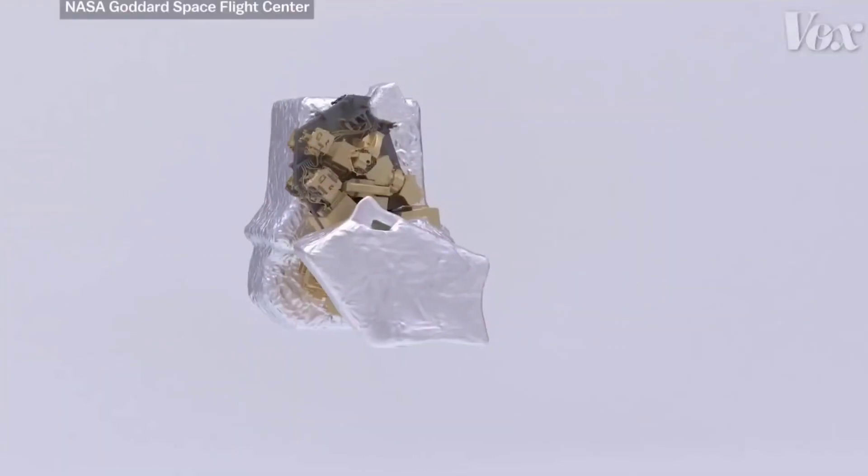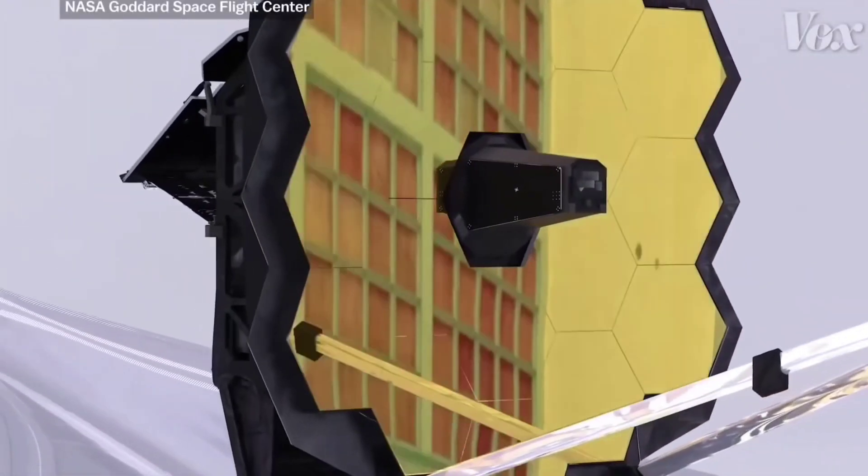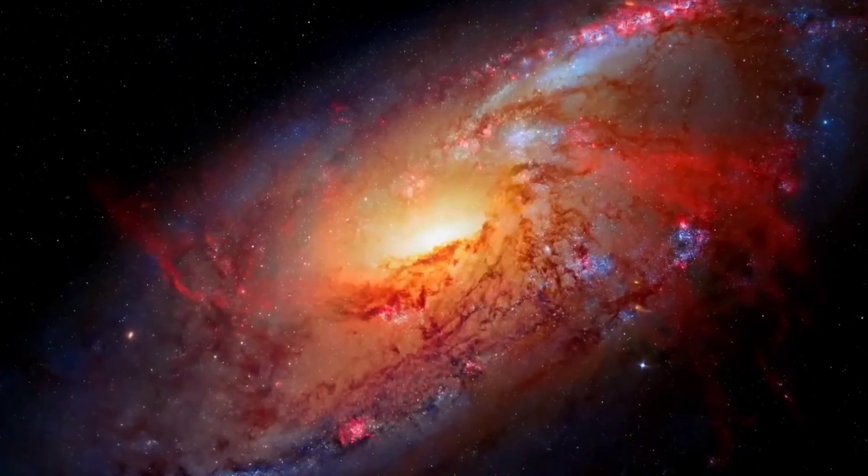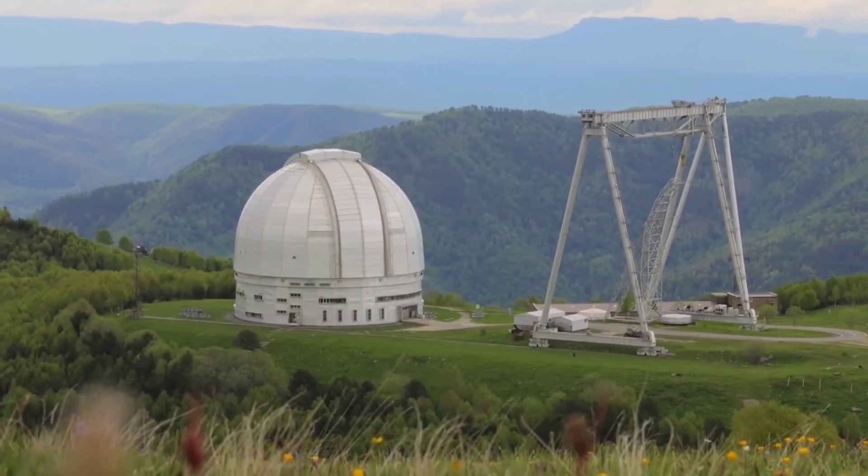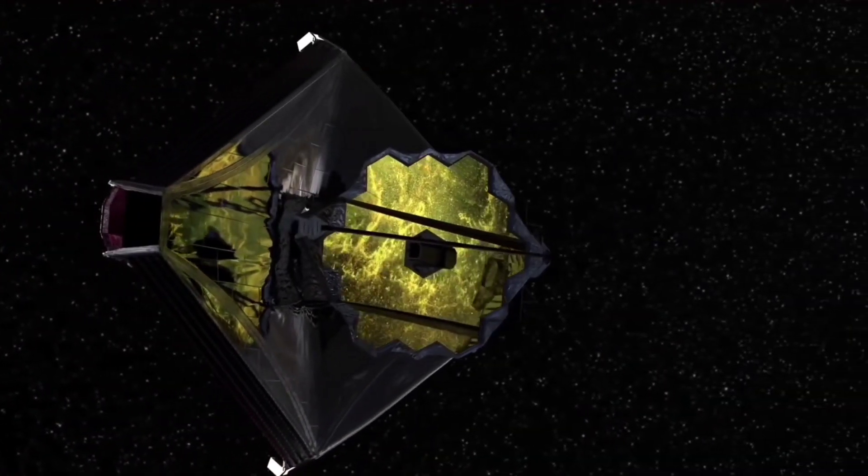Webb will be ready. More than two decades ago, when the first ideas of JWST were being debated, only the planets in our own solar system were known. Scientists have now found thousands of planets orbiting different stars in the Milky Way throughout this period.